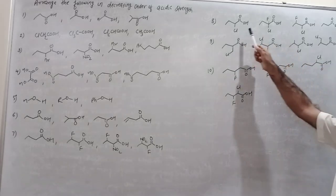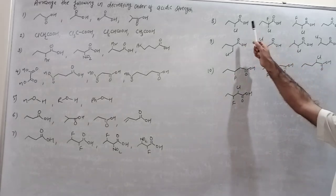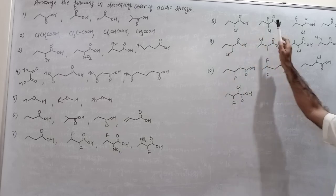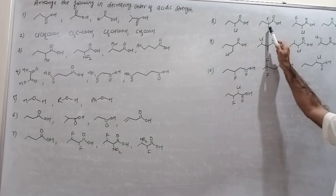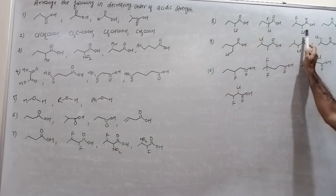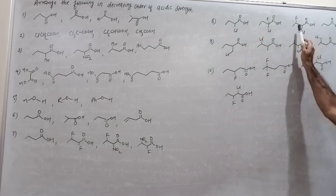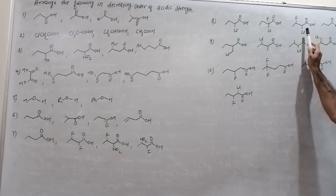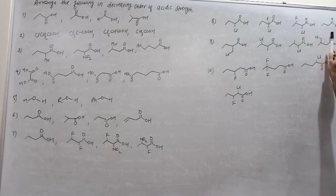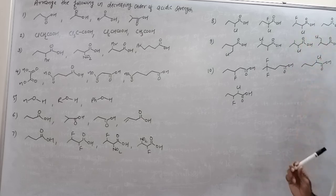Then in question 8, it is butanoic acid with fluorine at carbon number 2; in the next one, fluorine at carbon 2; then fluorine at carbon 3; fluorine at carbon 2; fluorine at carbon 3. This is normal butanoic acid.